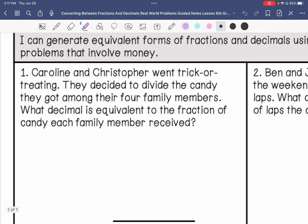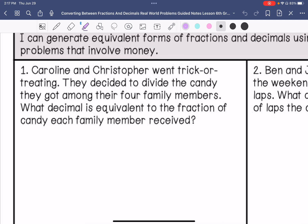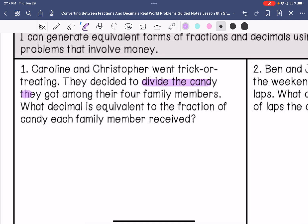Number one, Caroline and Christopher went trick-or-treating. They decided to divide the candy they got among their four family members. What decimal is equivalent to the fraction of candy each family member received? So there's four family members, and each family member is one out of four.